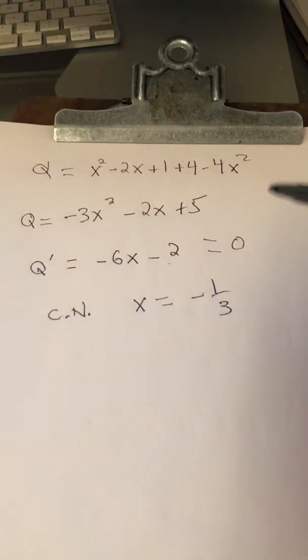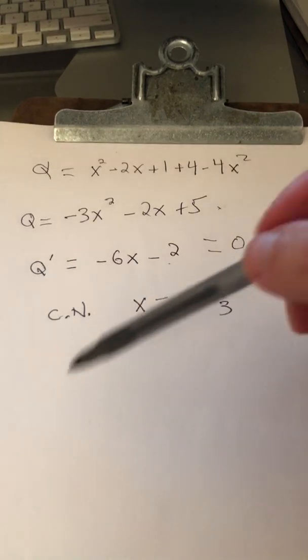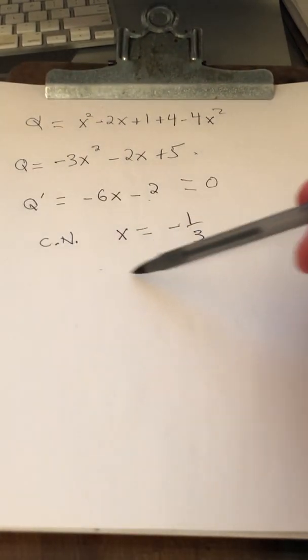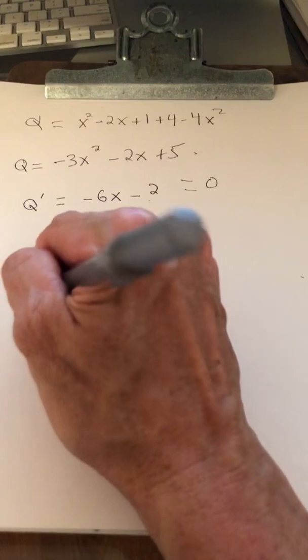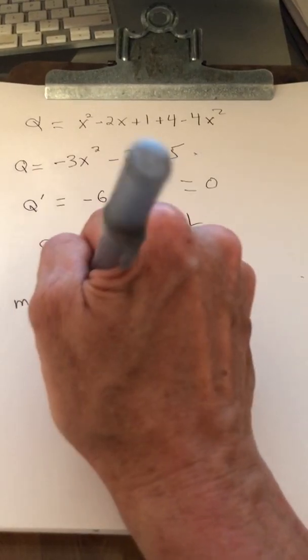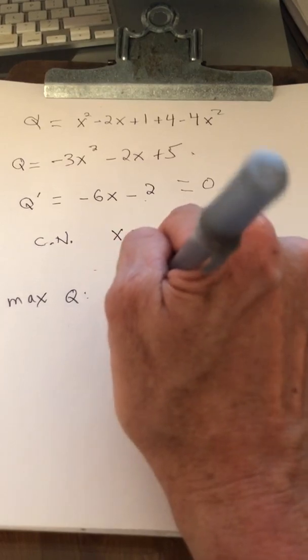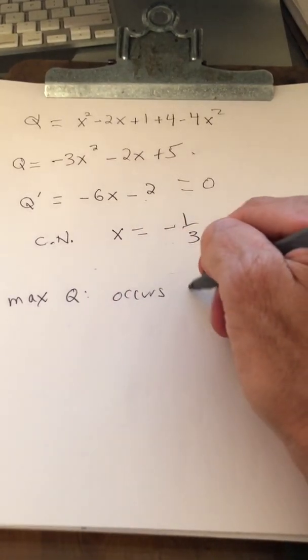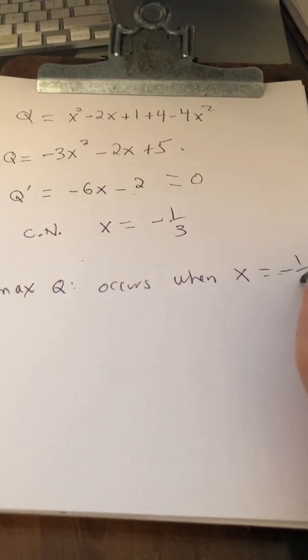Again, we already know it's going to have a maximum because of what we know about this function. We didn't really need that, you'd have to use the first derivative test to ensure that this corresponds to a maximum.